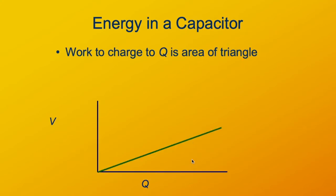If we want to charge the capacitor up to some charge Q, the voltage required to get the last part in is Q over C. The voltage required to get the earlier part in is quite a bit less. So the total work required is going to be the area under this triangle.